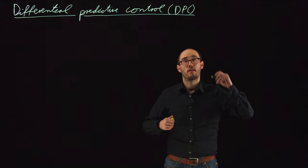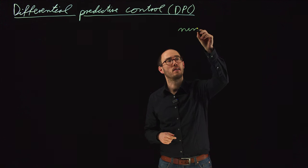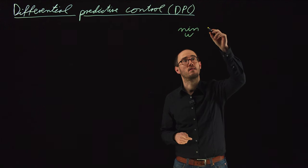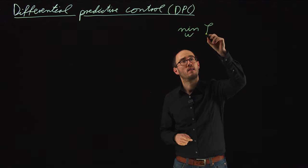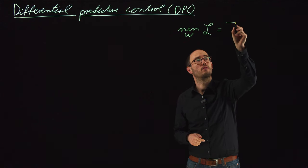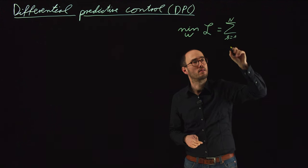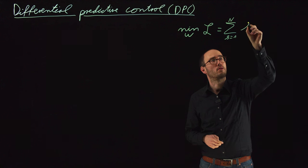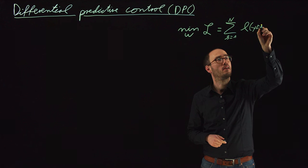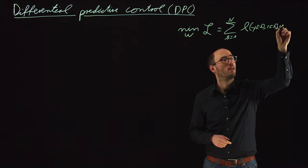In the DPC method, what we want to do is minimize with respect to some parameters w a cost function. We consider a standard cost function for control, which is the sum from k equals 1 to capital N of a so-called stage cost term, small n, depending on y_k, r_k, and u_k.